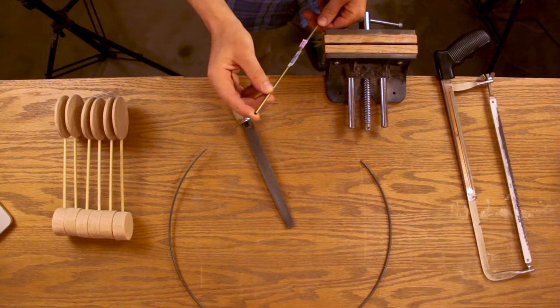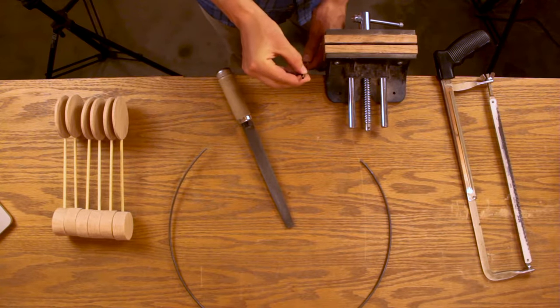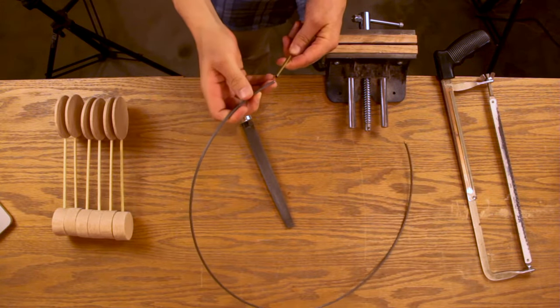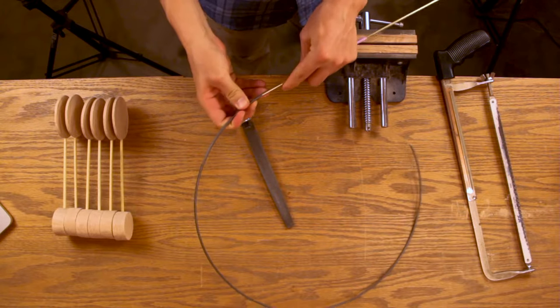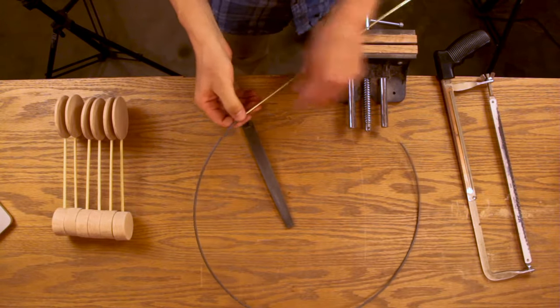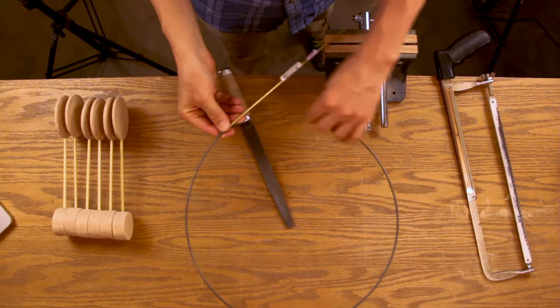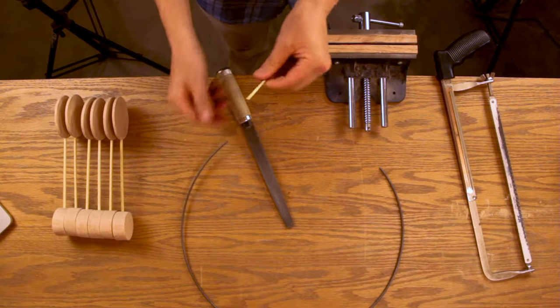Then I've got some brass tubing that's just the right inner diameter that this can act as a nice splice to close this hoop. So I'll cut off a length of that.